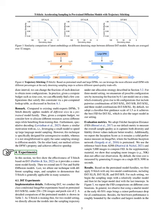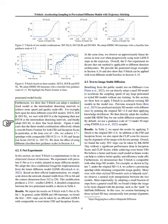In our experiments, we demonstrate the effectiveness of T-Stitch with DIT models as they provide a convenient family of models to work with. We extend our technique to U-Net and stable diffusion models and test it across different sampling steps and samplers to show its broad applicability. Our findings reveal that starting with a smaller model and transitioning to larger models can achieve significant speed-ups with minimal impact on image quality, as evidenced by our exploration of three model combinations achieving better trade-offs in terms of Fréchet Inception Distance, FID, and Inception Score.